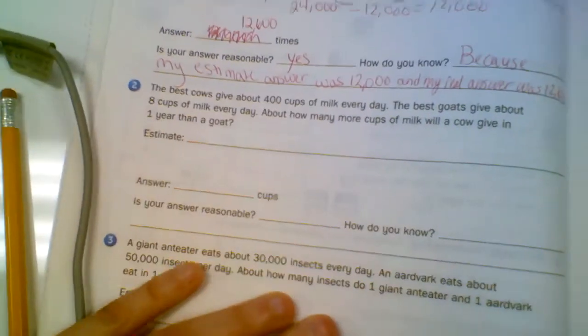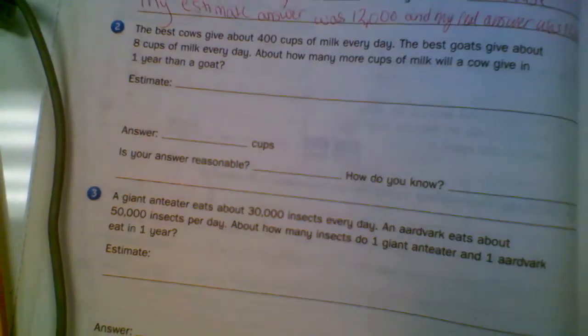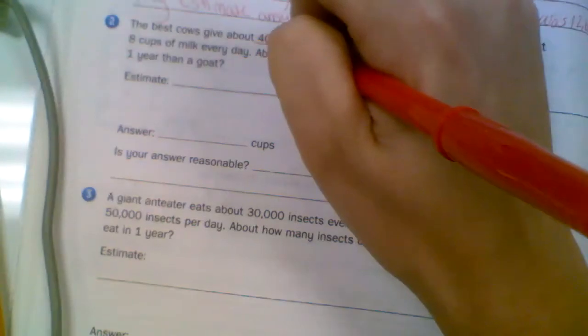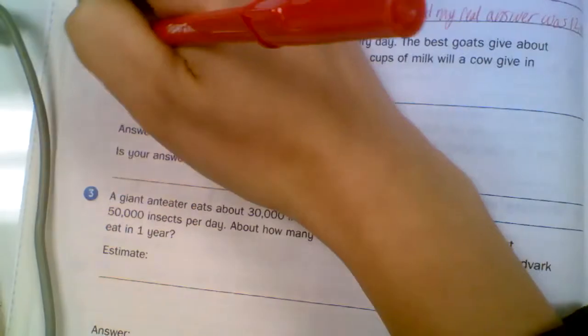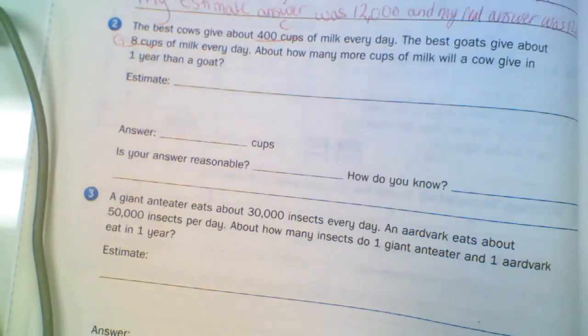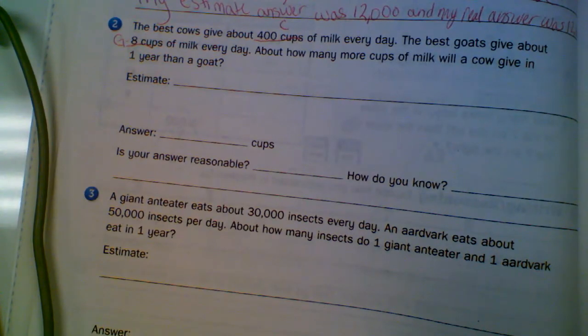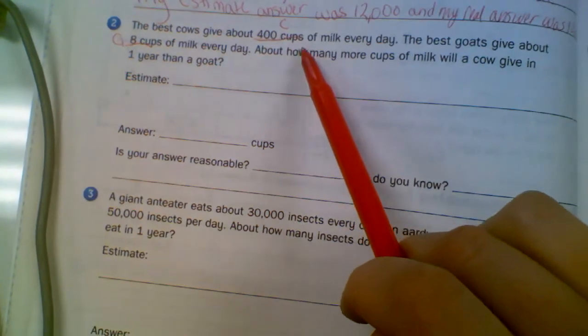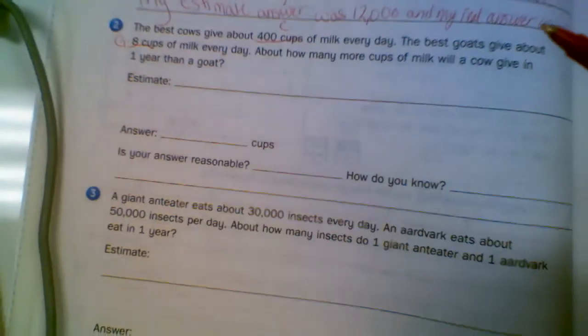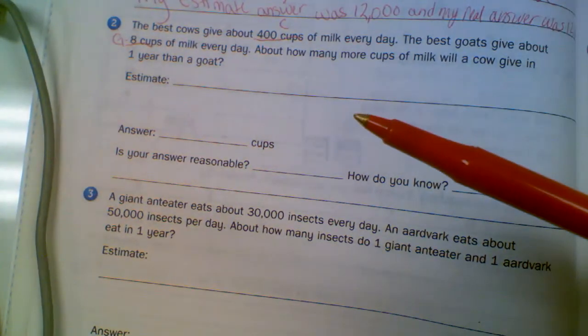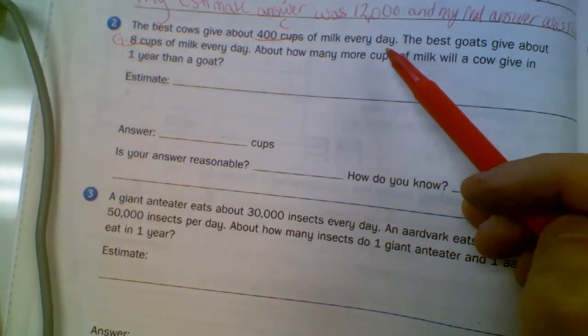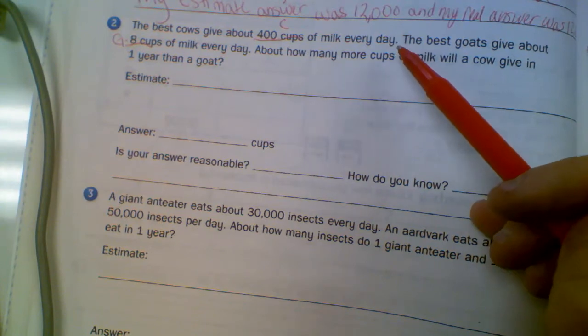Okay, next. This you can, if you are in class today, you'd be working on this with your table groups. But we will work on it together, you and I here. The best cows give about 400 cups of milk every day. Cow, 400 cups. The best goats give about eight cups of milk every day. So G for goat and eight cups. About how many more cups of milk will a cow give in a year than a goat? Okay, do we need to convert anything? Like on top, we needed to convert seconds to minutes. Wanting our answer in cups. And it talks about cups at the top. There and there. So we are good to go. We don't need to convert anything. The best goats give about eight cups. How many more cups of milk would a cow give in a year than a goat? Well, days though, that's the tricky part. So how many days are in a year? Every, for three years, we have 365 days.